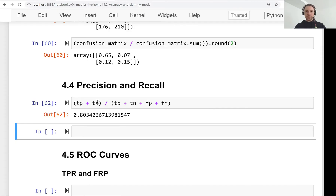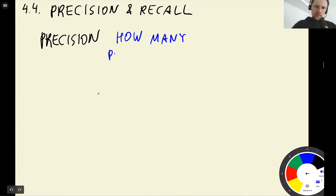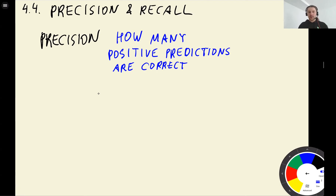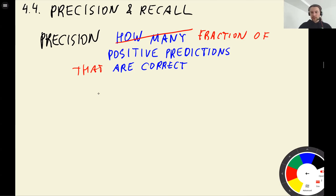So let's start with precision. Precision tells us how many — or more precisely, what fraction of — positive predictions turned out to be correct. So it means that we predict some customers as churning, and out of those, how many are identified correctly.